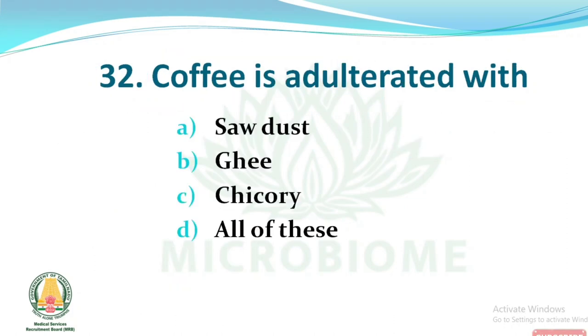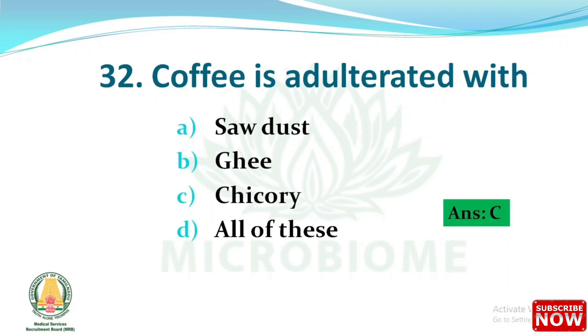Next question: coffee is adulterated with — options: (A) sawdust, (B) ghee, (C) chicory, (D) all of these. The right answer is option C, chicory.